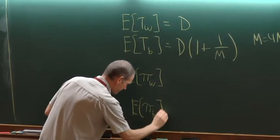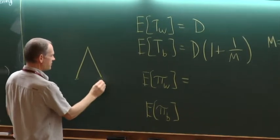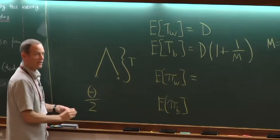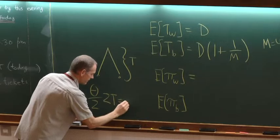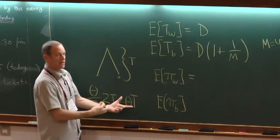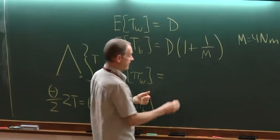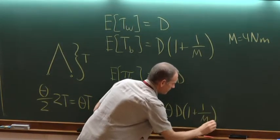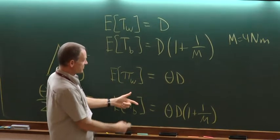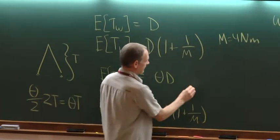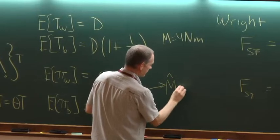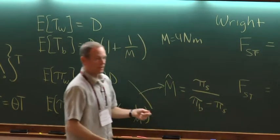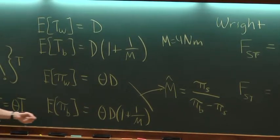The expected numbers of pairwise differences — remember, we're looking at a pairwise coalescent time, and the rate of mutation per unit of coalescence time is theta over 2, and there are two branches and time T. So if I take an expected value where the only random variable is T, I would just be multiplying by theta. I could then solve this equation for M and get a way of estimating NM from sequence data.